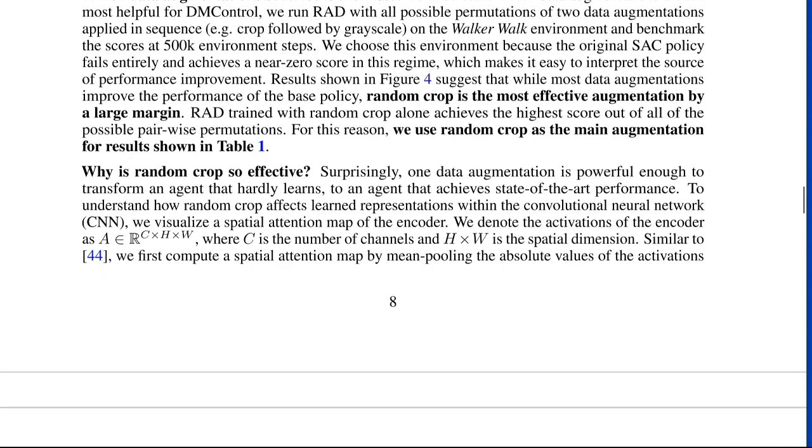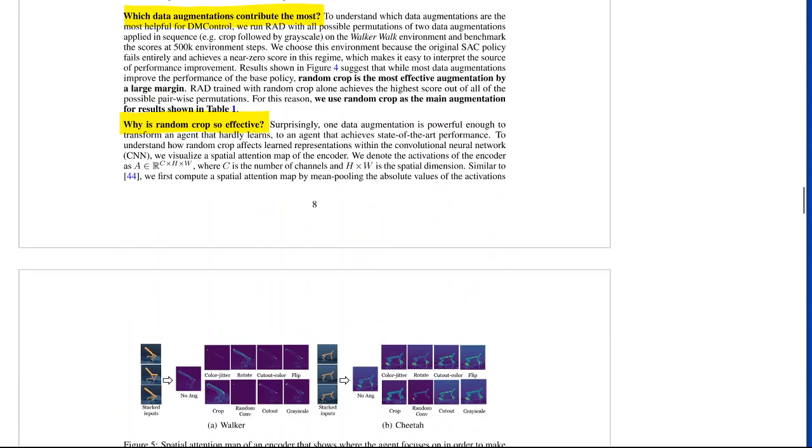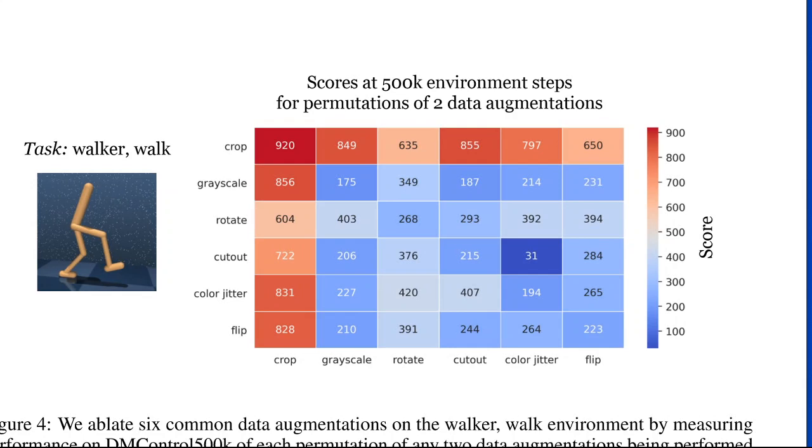And so they go into a question of which data augmentations contribute the most, and they get to the point where they say random crop is extremely effective. So they have this table here where they just basically combine two augmentations. If you apply crop and then crop, it gets you to 920 points and beats everything else. So they say, okay, crop is the most effective.